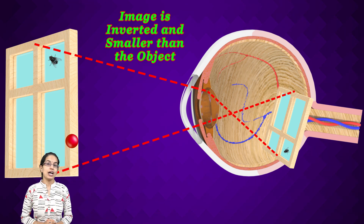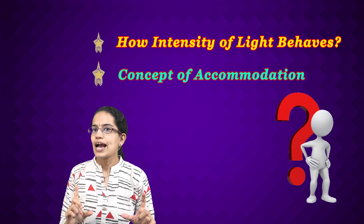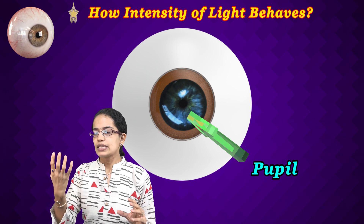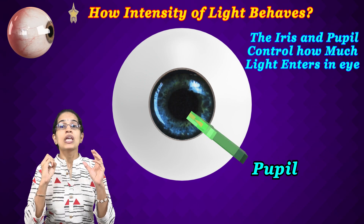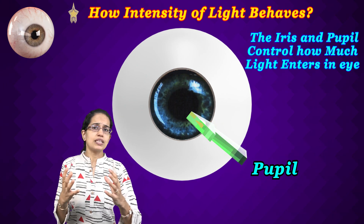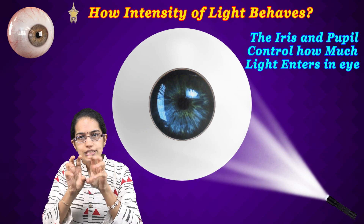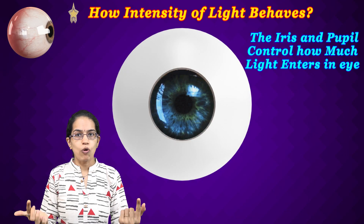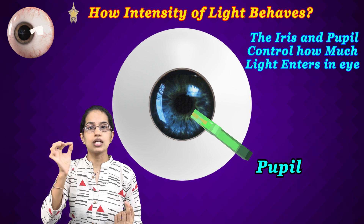Two important concepts to understand today: first, how the intensity of light is managed, and second, the concept of accommodation. To understand intensity of light, we need to understand the pupil. The changes in the pupil due to automatic reflex actions are very important. When there is suddenly bright light, you try to close your eyes and the pupil constricts. When there is dim light, the pupil expands. The pupil is the innermost dark circle visible within the iris.